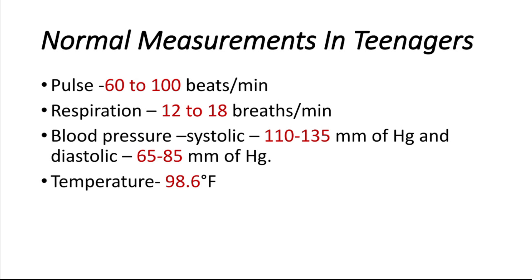The blood pressure in teenagers: the systolic range may vary between 110 to 135 mm of Hg, and the diastolic range is between 65 to 85 mm of Hg. The normal temperature in teenagers is near about adult level: 98.6 degrees Fahrenheit.